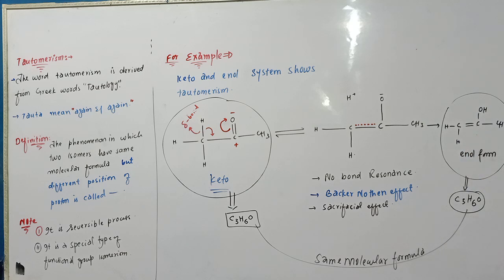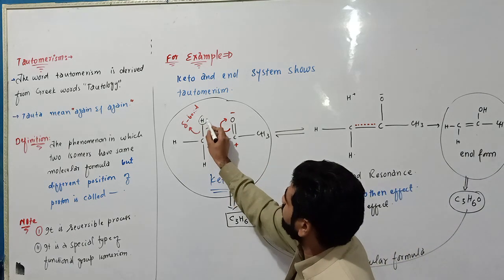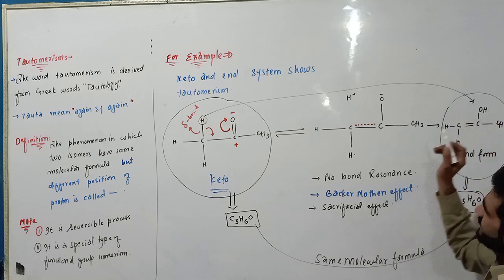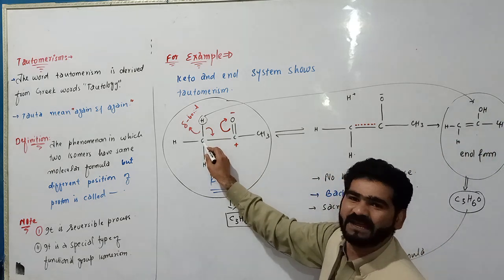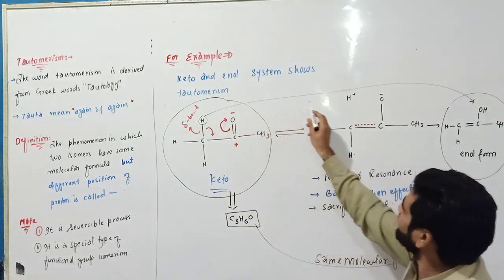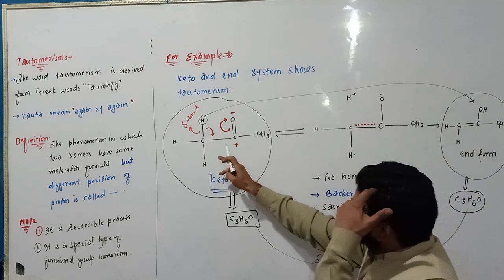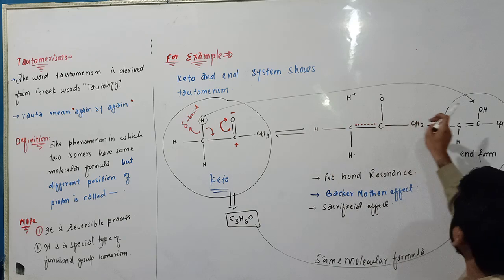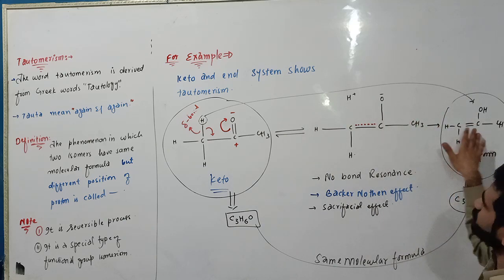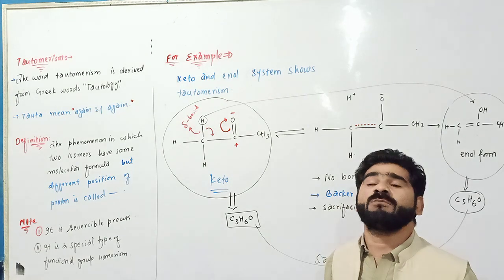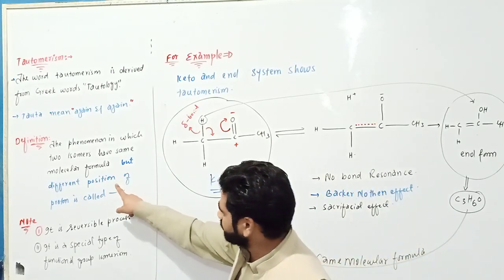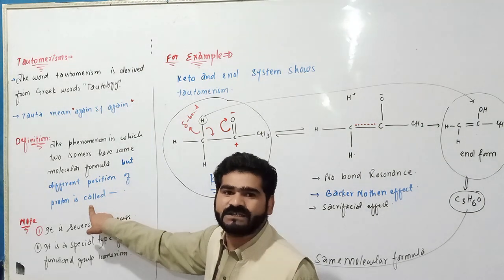The phenomena in which two isomers have same molecular formula but different position of proton, that will be called tautomerism.